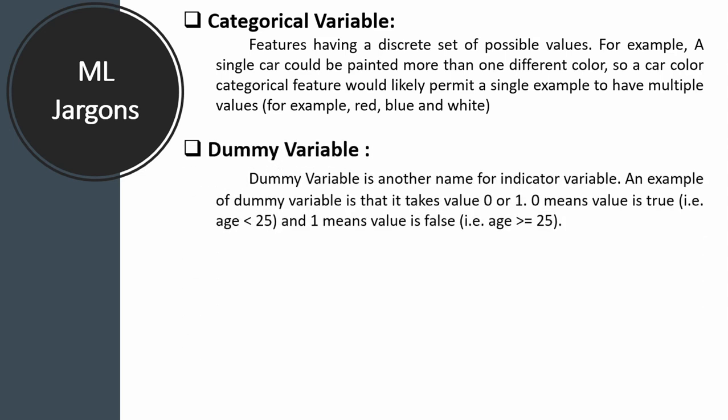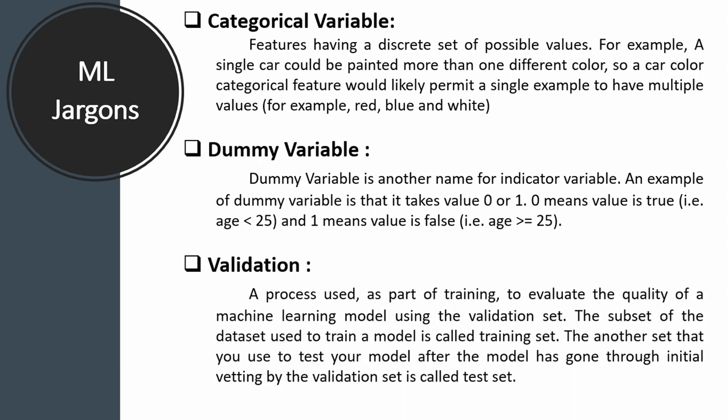A dummy variable, also known as an indicator variable, helps represent your variable in binary values — zeros or ones, or true or false. Validation refers to the entire process of your training model from top to end, where all the phases are applied.